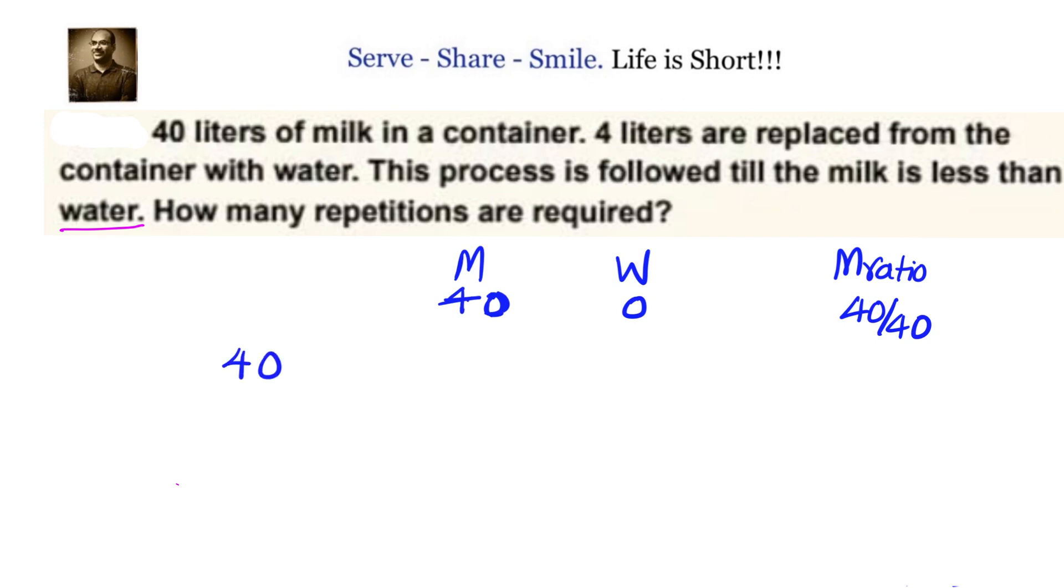Next time when you go, you are subtracting from 40 liters, 4 liters of milk. At that time milk ratio as we said 40 by 40, so that is giving us 40 into (1 - 4/40). After simplification, we get this is equals to 36.